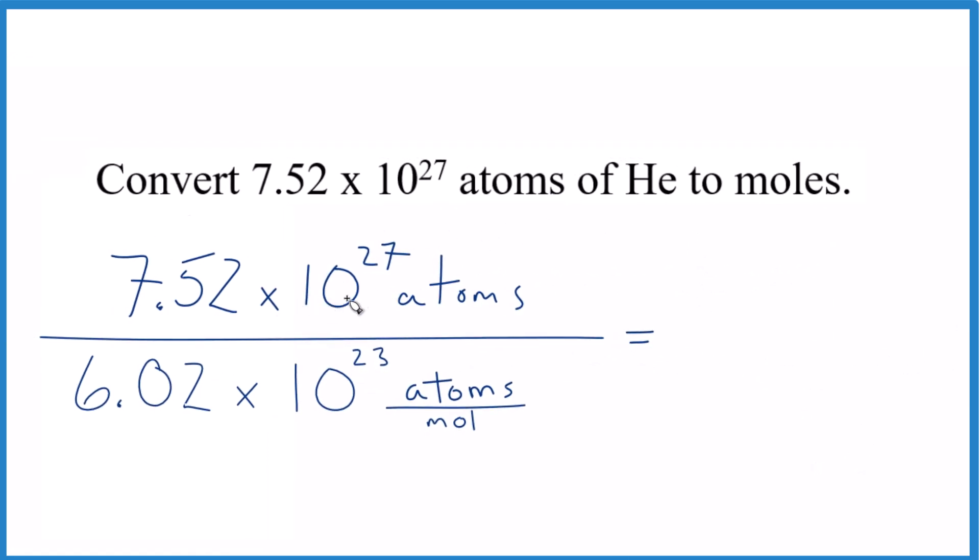We have our 7.52 times 10 to the 27th atoms from the problem divided by Avogadro's number. We have atoms on top and atoms on the bottom, so they cancel out, giving us moles, which is what we're looking for.